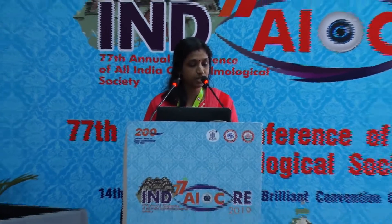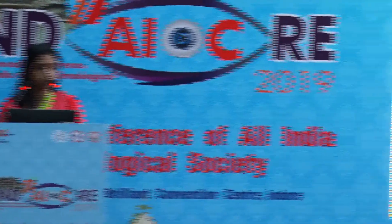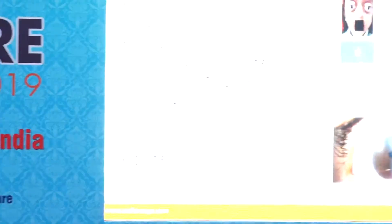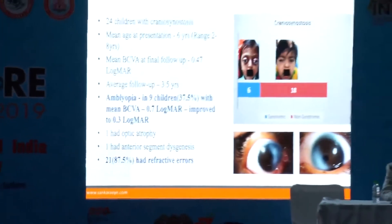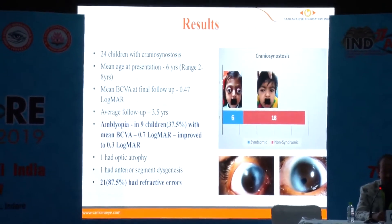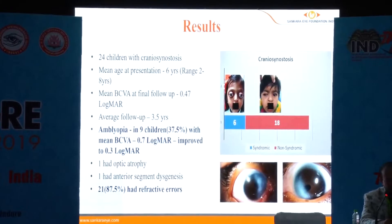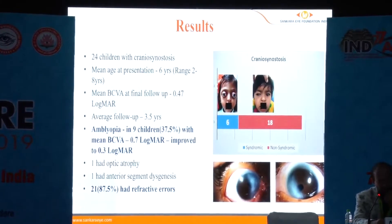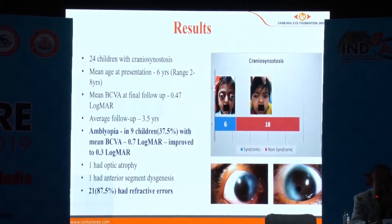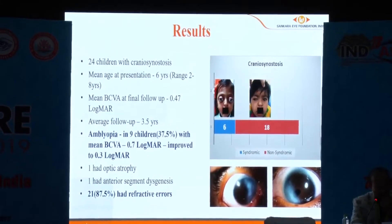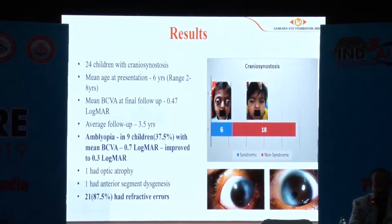The results were as follows: 24 children were identified. The mean age at presentation was 6 years. The mean BCVA at final follow-up was 0.47 LogMAR. The average follow-up was 3 and a half years. Amblyopia was found in 9 children, in whom vision improved from 0.7 LogMAR to 0.3 LogMAR. One had optic atrophy, one had anterior segment dysgenesis as shown in this picture, and 21 had refractive errors.